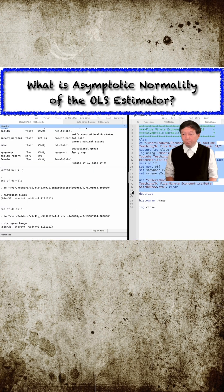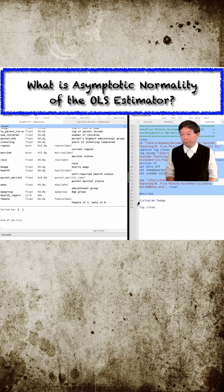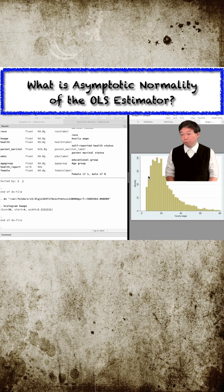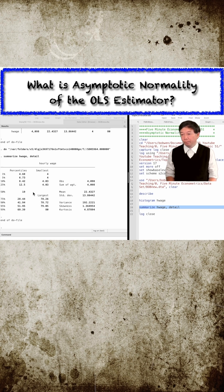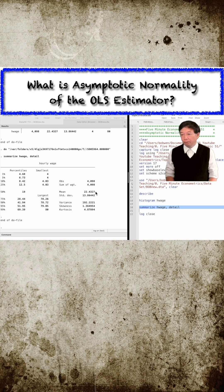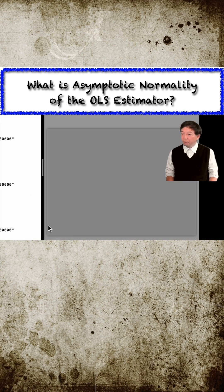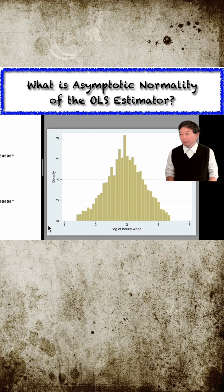In practice, we encounter many variables that are not normally distributed, such as wages and salaries. They usually have a right-skewed distribution because a small number of individuals earn extremely high wages, which pulls the average to the right and away from the median. Taking the logarithm of wages alleviates the problem but cannot eliminate it.